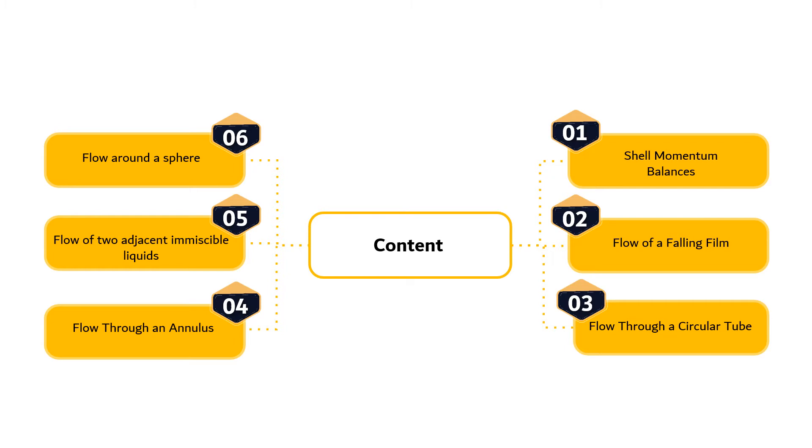Previously, we have discussed about module overview, shell momentum balances, flow of a falling film and flow through a circular tube. In this segment, we will discuss about flow through an annulus.